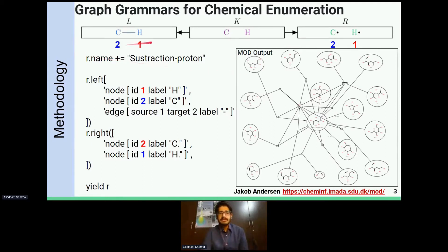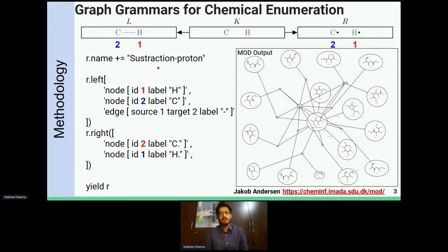Here's a basic example of how a rule is written. To make a radical from a bond, you write a rule to subtract a proton. These simple rules can encode chemical transformations for keto-enol tautomerism, shift tautomerism, Michael addition, and all the very fundamental reaction rules — about 40-50 fundamental organic chemical reactions that we looked at.